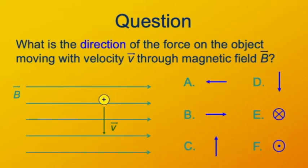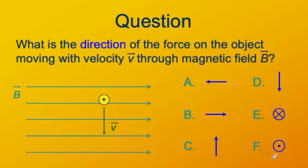Let's practice. If we have a uniform magnetic field B directed to the right, and a positive charge moving downward with velocity V, what's the direction of the Lorentz force on this charge? You can use your right hand or your origami right hand. Pause the video and see if you can come up with the answer. The answer is F directed out of the screen — the force is coming toward you.